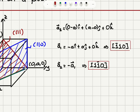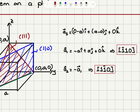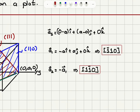To determine a direction, we write a vector in that direction, identify the coefficients in terms of î, ĵ, and k̂, and divide by the highest common factor. For negative values we put a bar. So we obtain [1̄10], and to negate this vector we multiply by minus 1 — where we see a bar we remove it, and where there is no bar we add one — giving [11̄0].